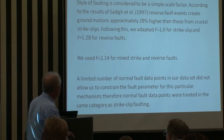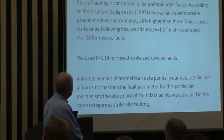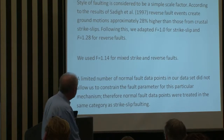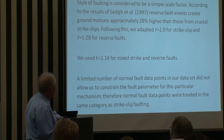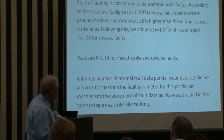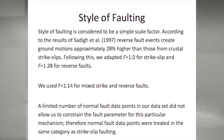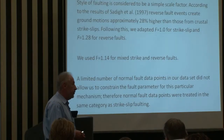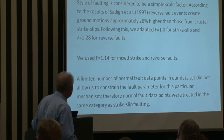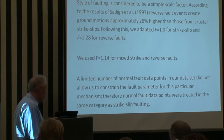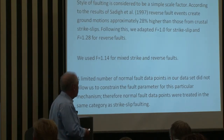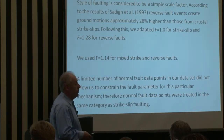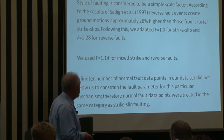Regarding style of faulting, we did very simple work. We used basically the same approach as the publication by Sadi et al. 1997, where they took a factor of 1.0 for strike-slip, 1.28 higher for dip-slip, and we used F = 1.14, basically half and half, for mixed events. For normal faulting, we didn't have any constraints, so we stayed with 1.0 — we treat normal faults the same as strike-slips. We looked at the data and didn't see any real problems with this more or less simple interpretation.